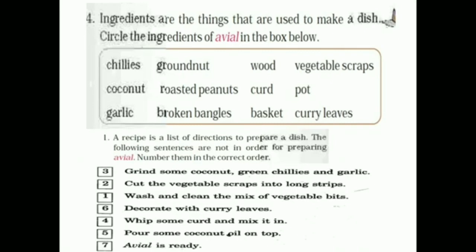Next one, here is the ingredients are the things that are used to make a dish. Circle the ingredients of avial in the box. So ingredients means the things which are used to make a dish. So here in the box, so many ingredients are there. We want to find out which are the ingredients to make avial.